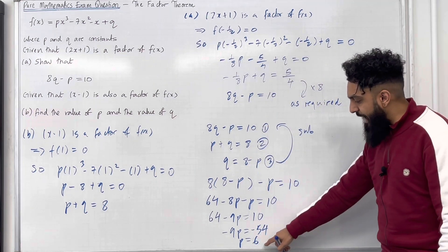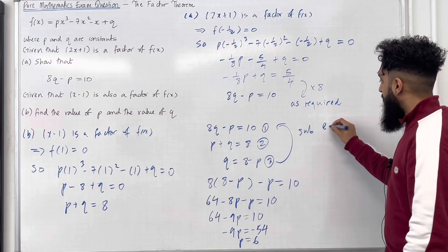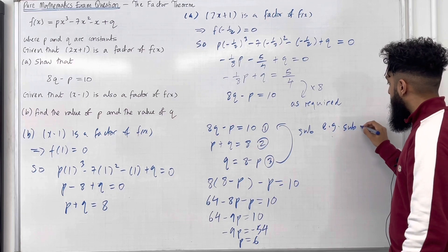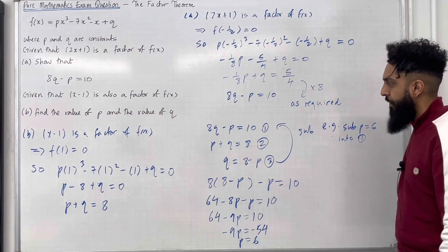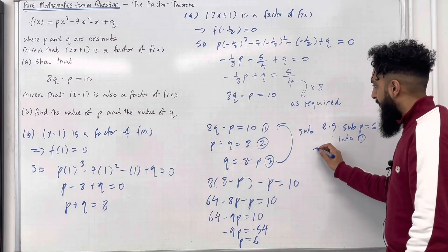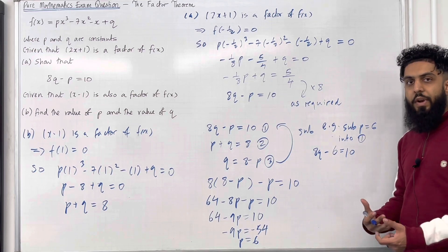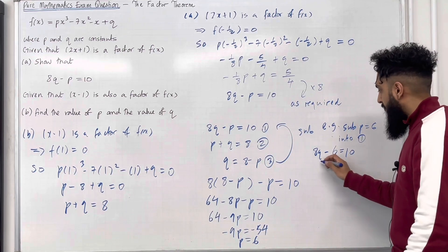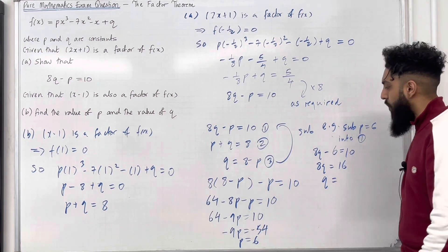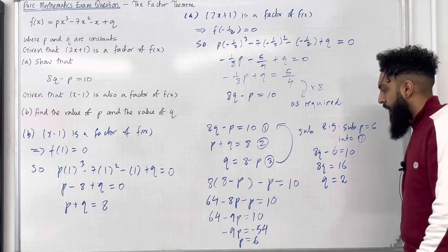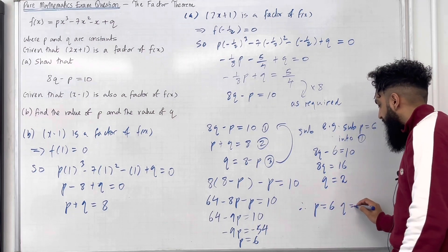I'm going to substitute p equals 6 into equation 1. So substituting p equals 6 gives 8q minus 6 equals 10. Rearranging to make q the subject: 8q equals 16. Hence q equals 16 divided by 8, which is 2. Therefore p equals 6 and q equals 2.